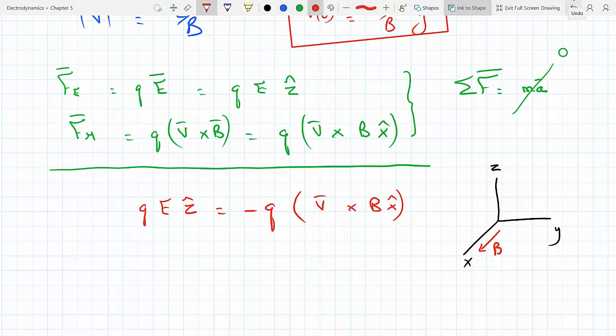Because look, if v is in this way, what's v cross B? Well, do the right-hand rule. V cross B. This would put their cross product in the negative z. This would be their cross product. This would be v cross B. So this would be in the minus z. And you have a minus here, which would make the final result...